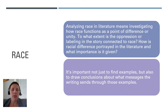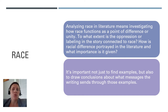It's also possible that the literature is critiquing and resisting these race-based labels. Analyzing race in literature means investigating how race functions as a point of difference or unity, to what extent oppression in the story is connected to race, and how racial difference is portrayed. It's important not just to find examples, but also to draw conclusions about what messages the writing sends through those examples.